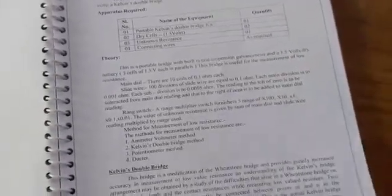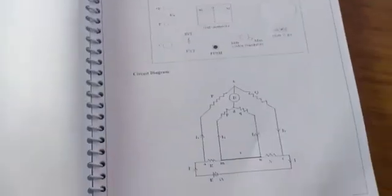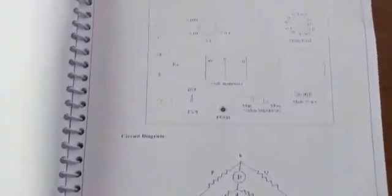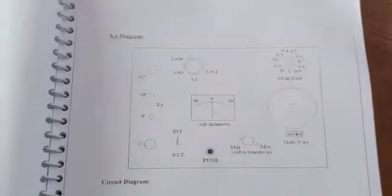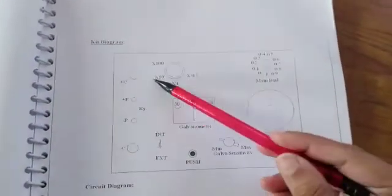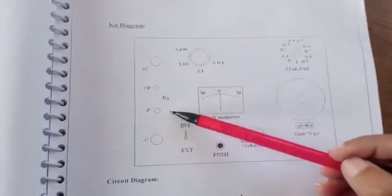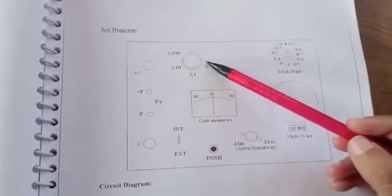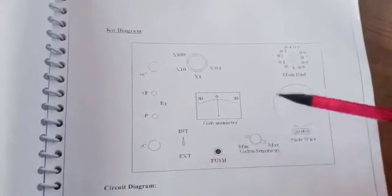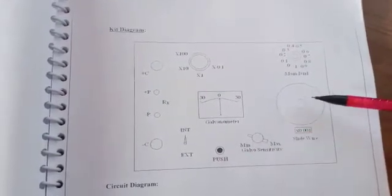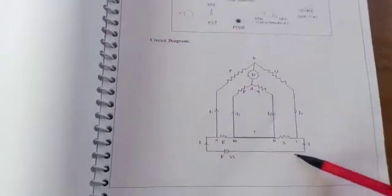Kelvin's double bridge is a modification of the Wheatstone bridge. Here is the theory and circuit diagram. The kit has terminals labeled C and P — C means current coils and P means potential coils. There is also a multiplier, galvanometer push buttons, galvanometer sensitivity (minimum and maximum), a slide wire, and a main dial. This is the circuit diagram for the Kelvin double bridge.